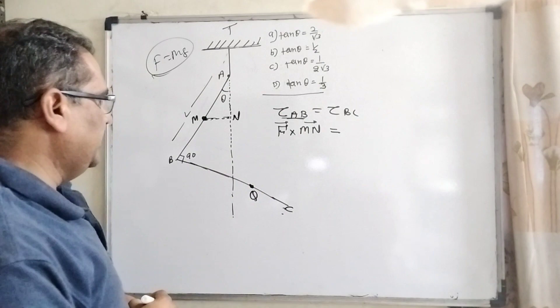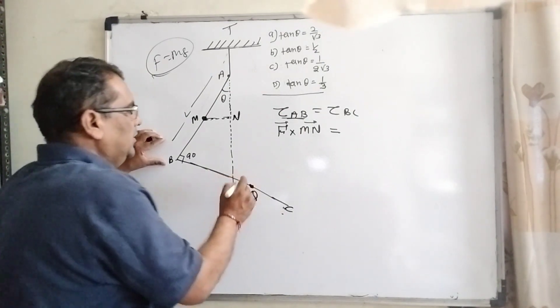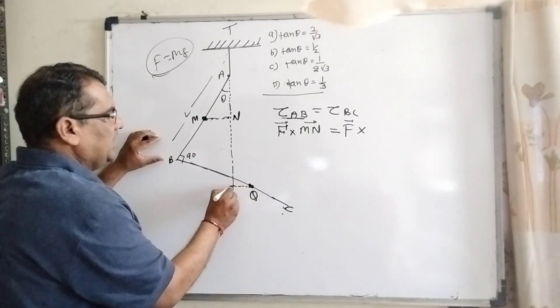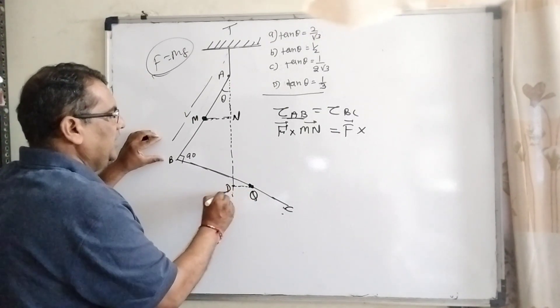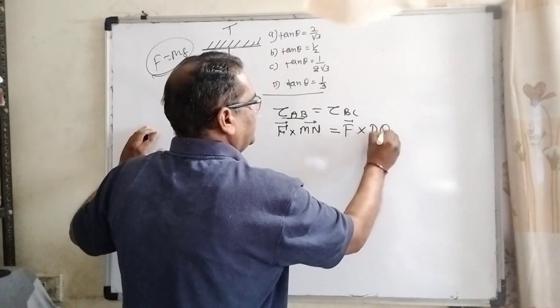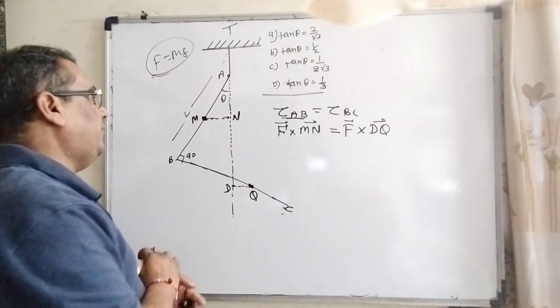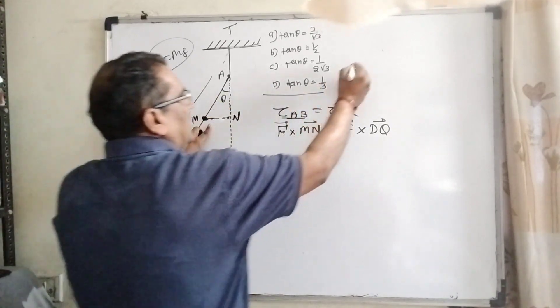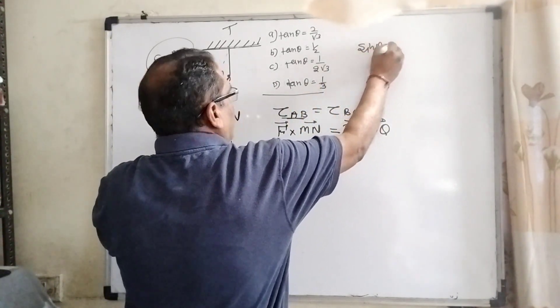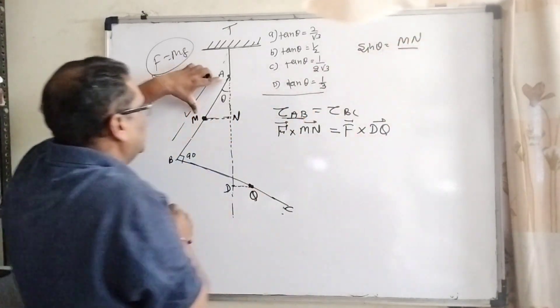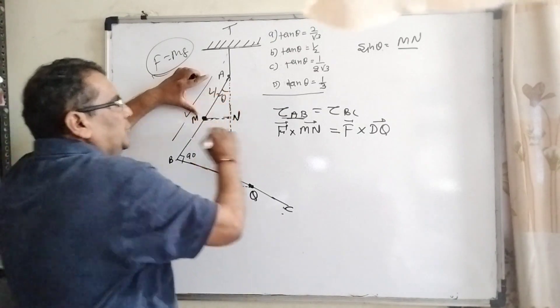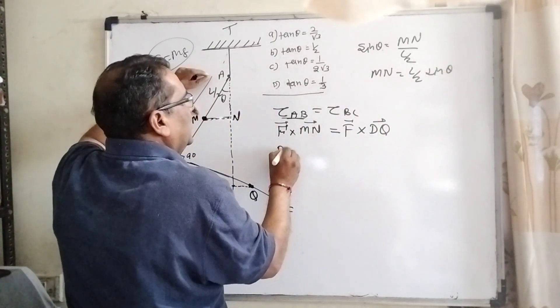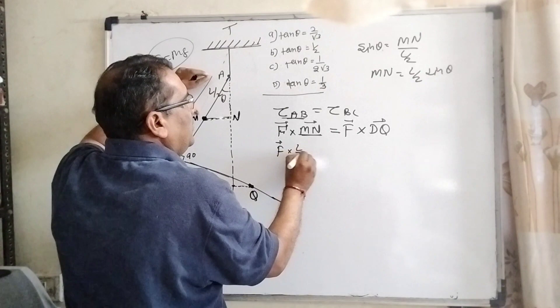Here tau BC, tau BC means F and perpendicular, this is perpendicular distance, let we consider DQ. This is the basic concept. Now we have to find out MN. How can we find out MN? You can see that this is triangle MNB. Then sine theta equal to this perpendicular distance MN and this is the distance from the center of mass L by 2. So MN equal to L by 2 sine theta. So in the place of MN we substitute L by 2 sine theta.